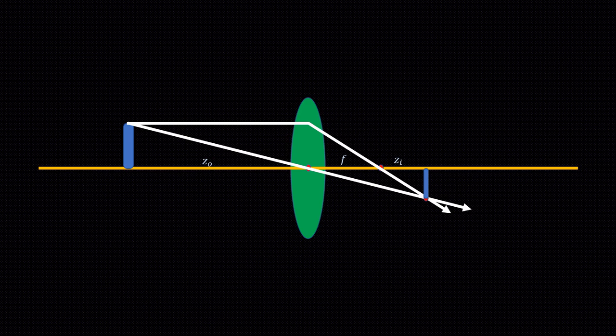Relationship between dimensions of the object and the image is given by the equation: x is equal to minus zi x by z0.